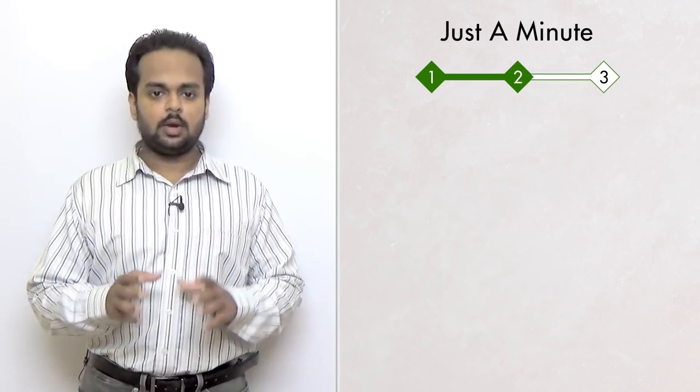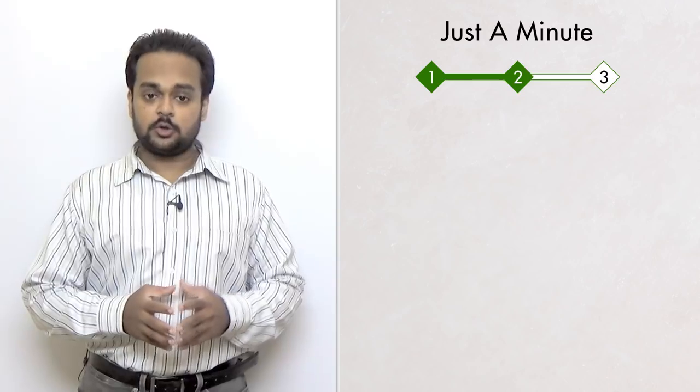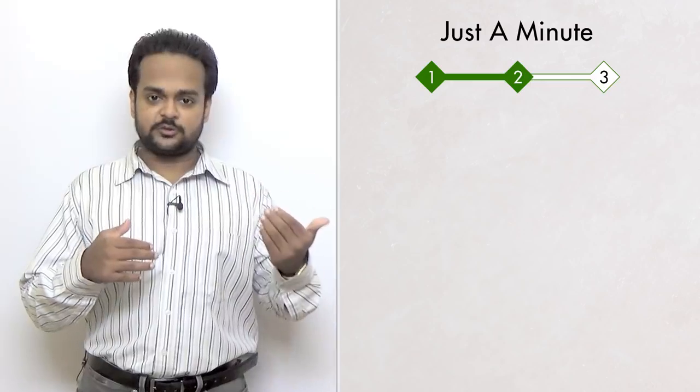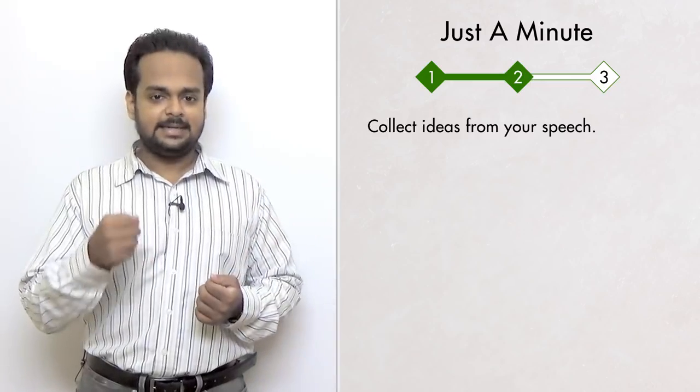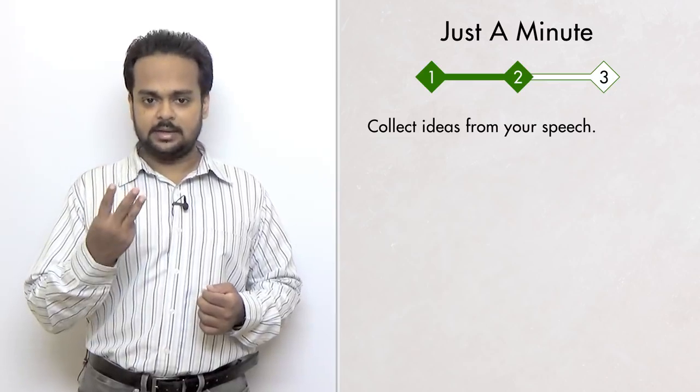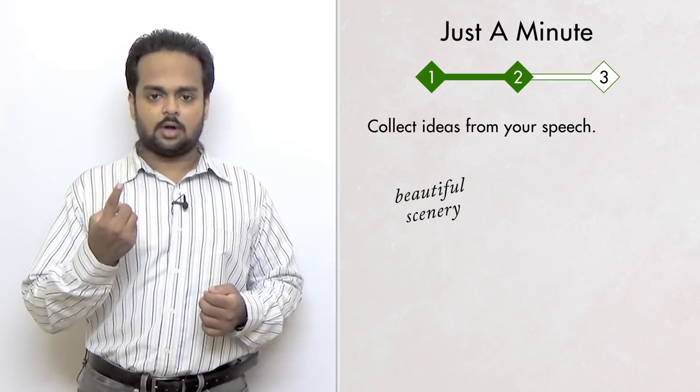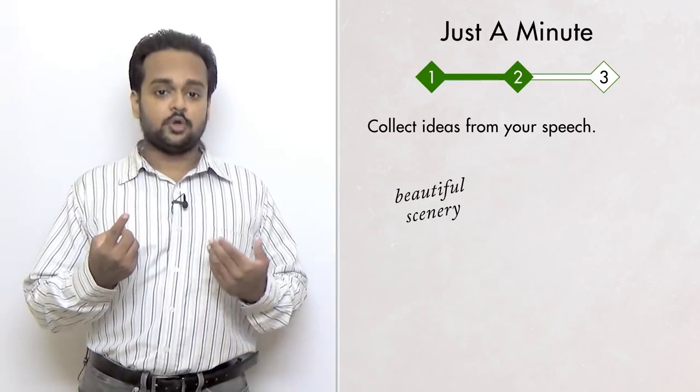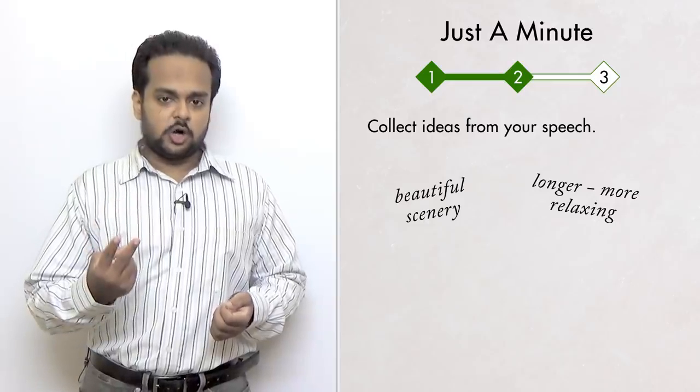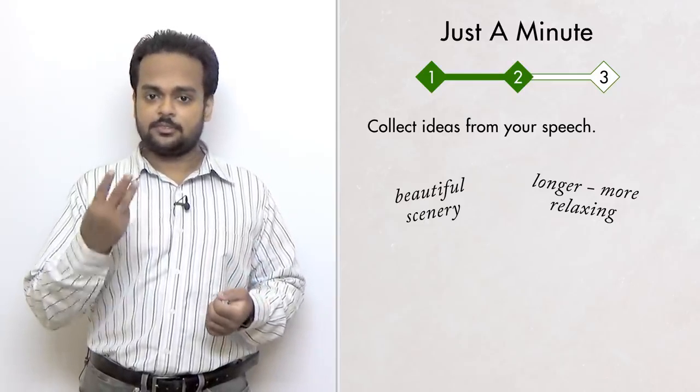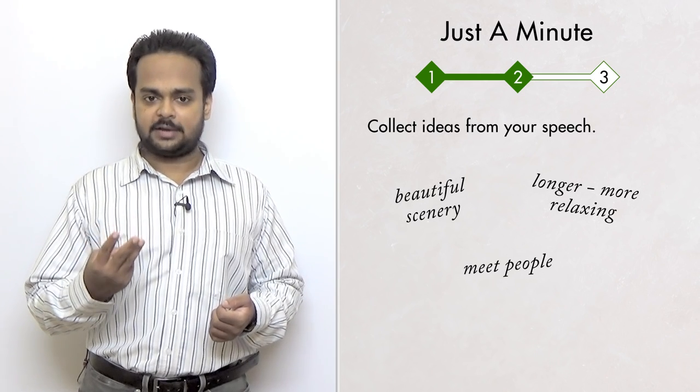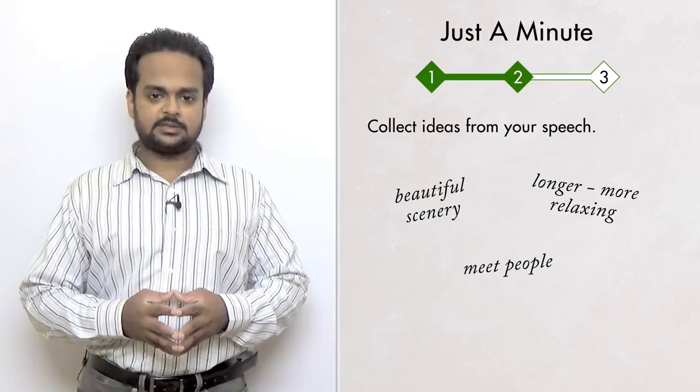The first part of stage two is making notes. So you can use a paper and pen now. And you're going to think back to the speech that you just gave and collect ideas that you came up with. In my speech, I remember that I had three ideas. The first was that on train journeys you get to see a lot of beautiful scenery. The second idea was that train journeys are longer, so they're more relaxing. The third idea was that you get to meet interesting people and make friends.